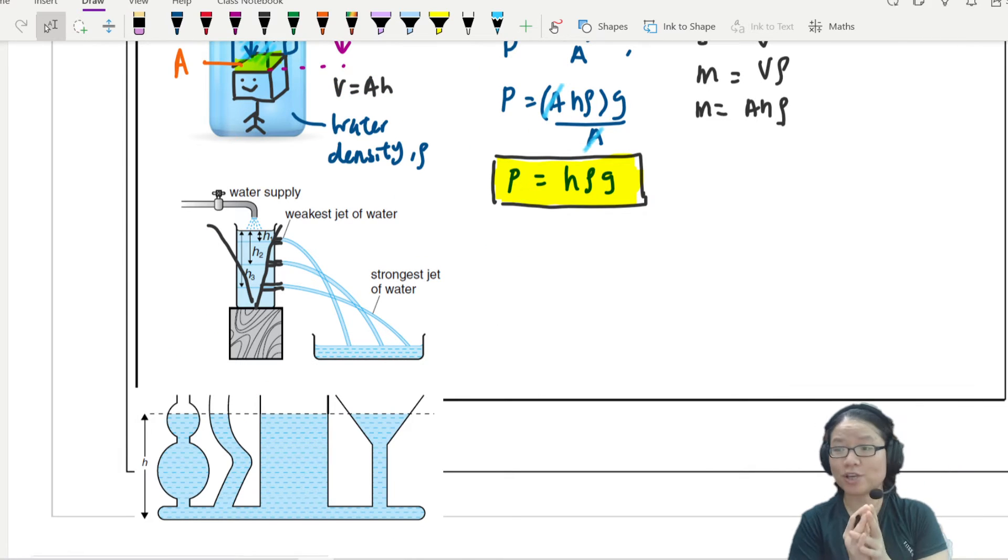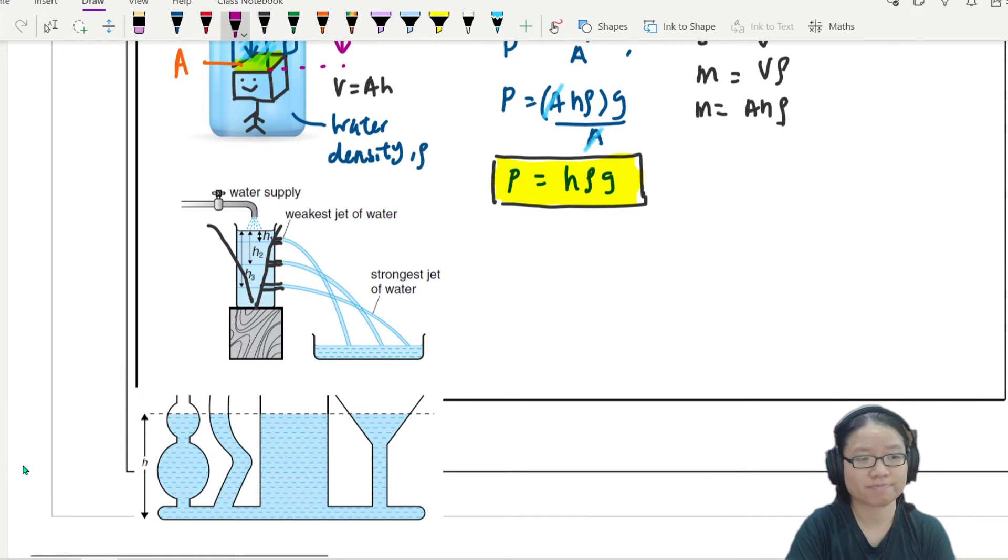Another diagram to look at is this one. So if you look at this, wow, the strange looking shape. Don't worry. Same height, same pressure. So if you are here or here or here or here, let's say I call this 1, 2, 3, and 4. The pressure at 1 will be equal to the pressure at 2, will be equal to the pressure at 3, will be equal to the pressure at 4. Because they are at the same depth.